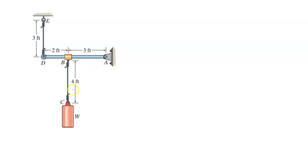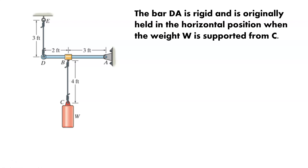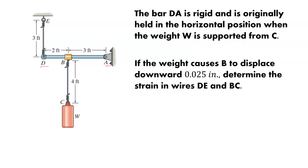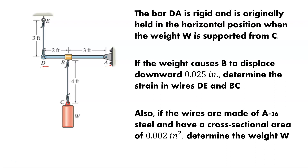We've got this image here that we want to look at. You've got this bar DA, from end to end — point D, point A — that's rigid, and is originally held in the horizontal position when the weight W is supported from C. If the weight causes B to displace downward 0.025 inches, determine the strain in wires DE and BC. Also, if the wires are made of A36 steel and have a cross-sectional area of 0.002 inches squared, determine the weight W.